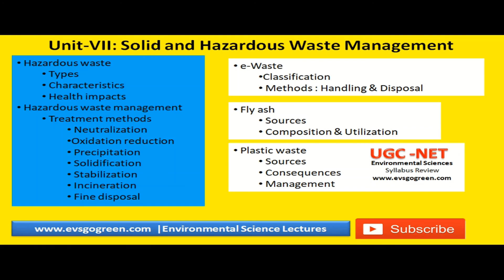First, e-waste — how it is classified and what are the different methods for handling and disposal of e-waste. Second, fly ash — what are the different sources of fly ash, how it is composed, and how do you utilize it. The unit ends with a note on plastic waste: their sources, their consequences in the environment, and how you manage plastic waste. This completes the unit seven syllabus component on solid and hazardous waste management.